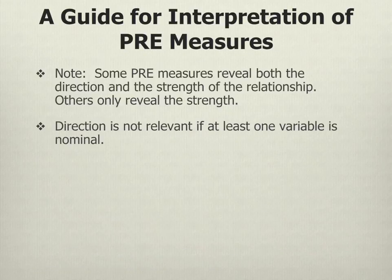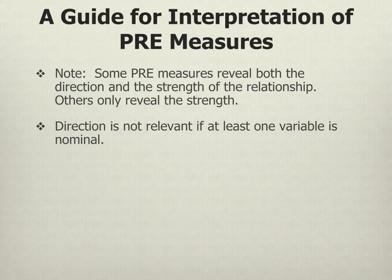Some PRE measures can give the direction as well as the strength. If you're using a measure appropriate for ordinal variables, you may also be able to obtain the direction of the relationship in addition to the strength. If you have two ordinal variables and your PRE measure is positive, this means as one goes up, the other goes up. If it's negative, that means as one goes up, the other goes down — it's an inverse relationship.